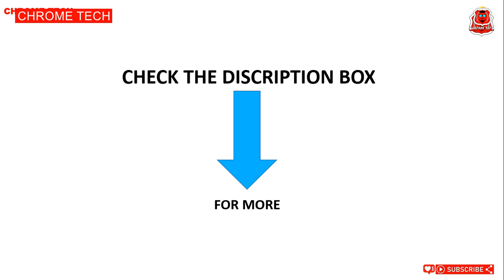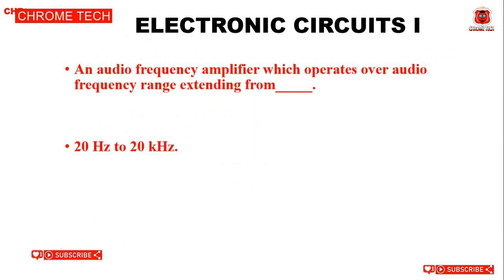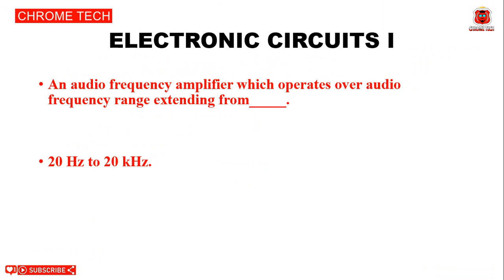Check the description box for more questions. The Electronic Circuit 1 book product link is given in the description box — you can use it. The next video will cover control systems, signal systems, linear algebra, differential equations, digital electronics, fundamentals of data structures in C — all multiple choice questions.